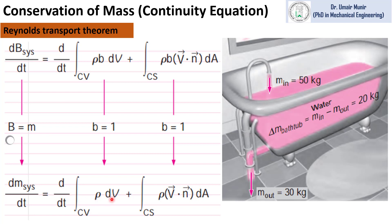Rho times delta V is the mass changing inside the control volume. The net mass flow rate crossing the control surface at the inlet and outlet is represented by this surface integral term, where rho V delta A is the mass flow rate. V dot N is the velocity in the normal direction, and N is normal to the surface. At the inlet, the normal to the surface points in the downward direction.